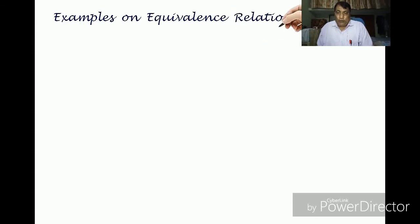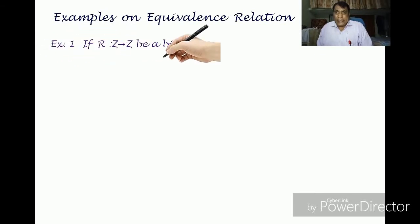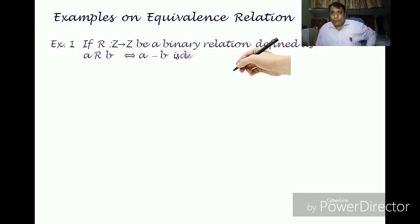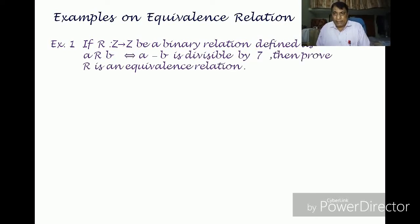Next is an example by which we can demonstrate what an equivalence relation is. The question is: if R from Z to Z is a binary relation defined as a related to b if and only if a minus b is divisible by 7, then prove that R is an equivalence relation.